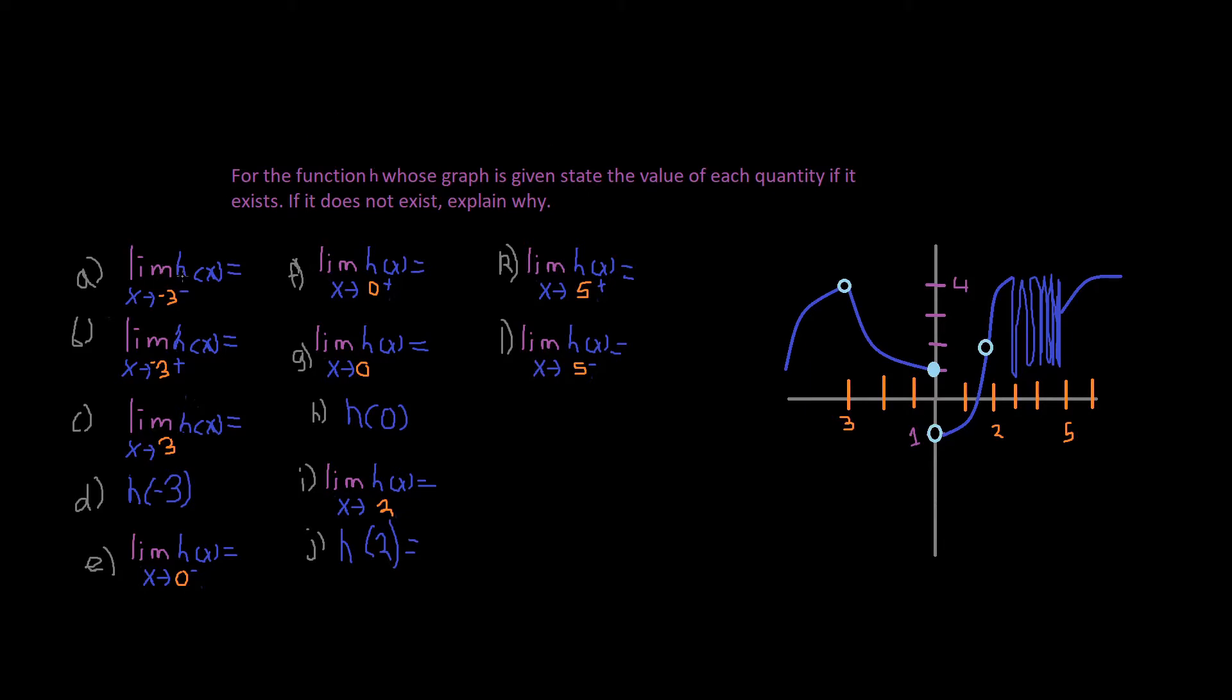So it says limit of h of x as x approaches negative 3 from the left hand side. If you guys don't remember the symbols, this is what they mean. L means left hand side, L minus. R P means positive, right side. So left means negative, right means positive. That's just the mnemonics.